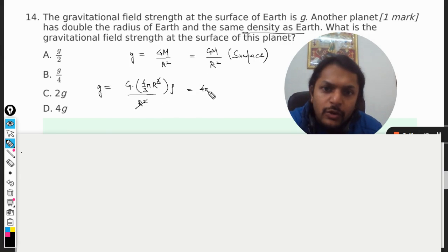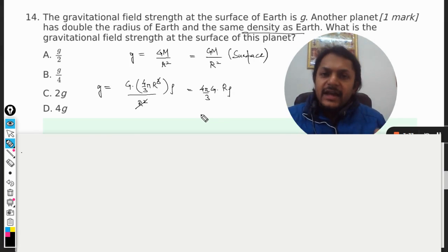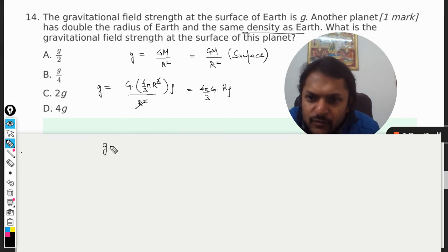So g1 divided by g2, now I'm going to do that. Let us first write what is g1, so g1 will be the same: 4 by 3 pi capital G r is the radius of earth, rho is the density of earth.